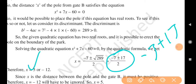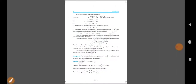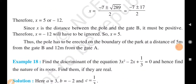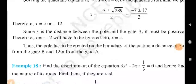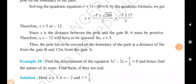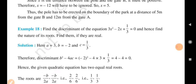The discriminant b square minus 4ac gives 289, which is greater than 0, so two real roots exist. Using the quadratic formula x equals minus 7 plus or minus 17 upon 2, we get x equals 5 and x equals minus 12. Since distance cannot be negative, x equals 5. So the pole is 5 meters from gate B and 12 meters from gate A.